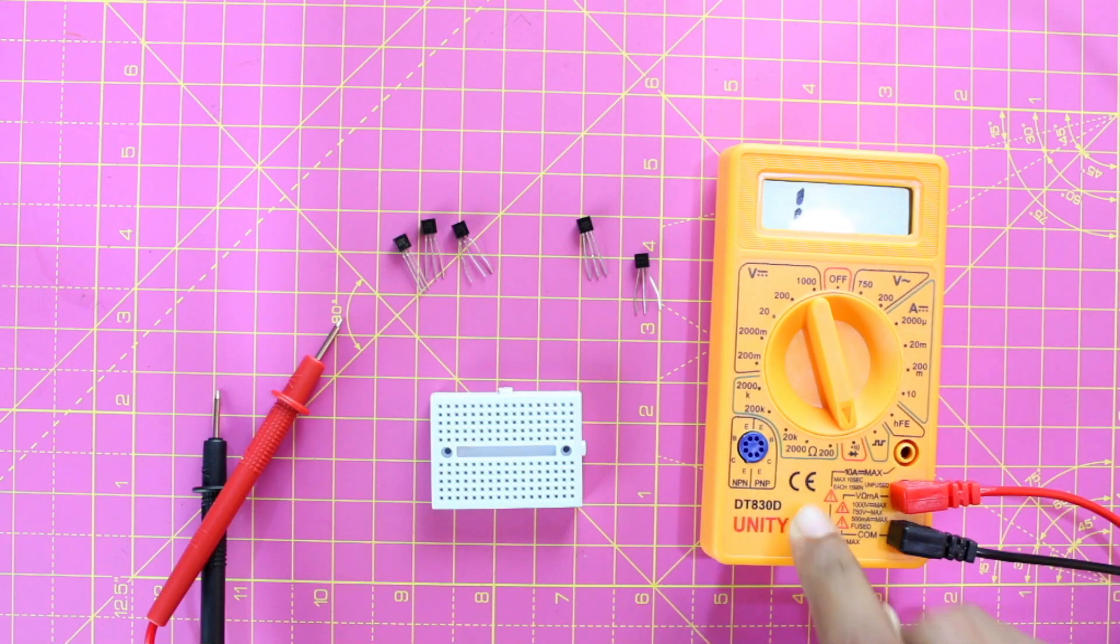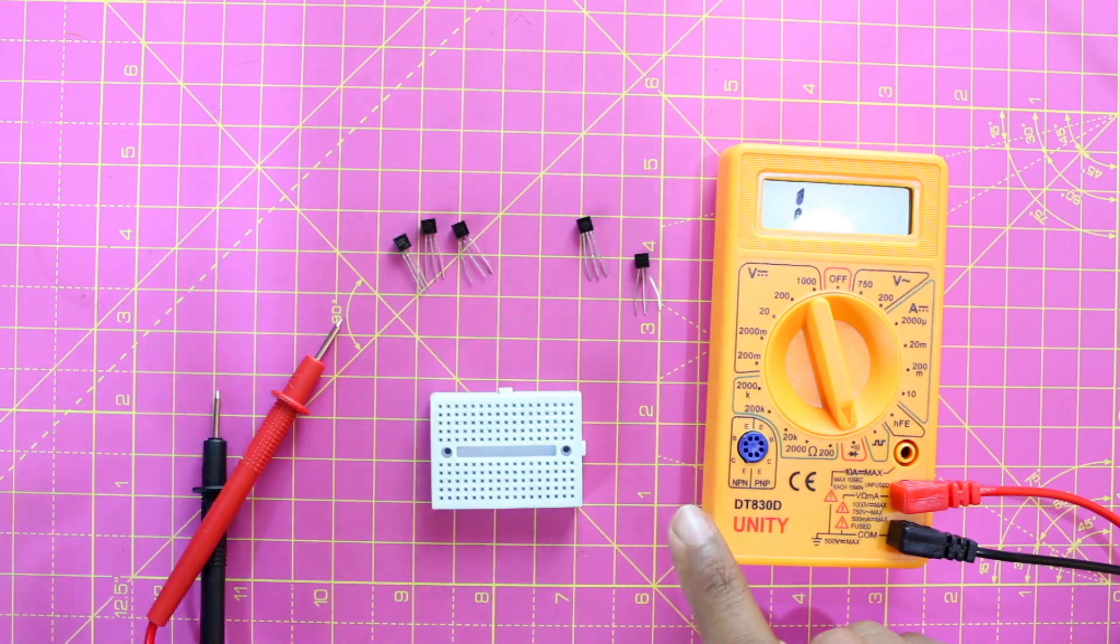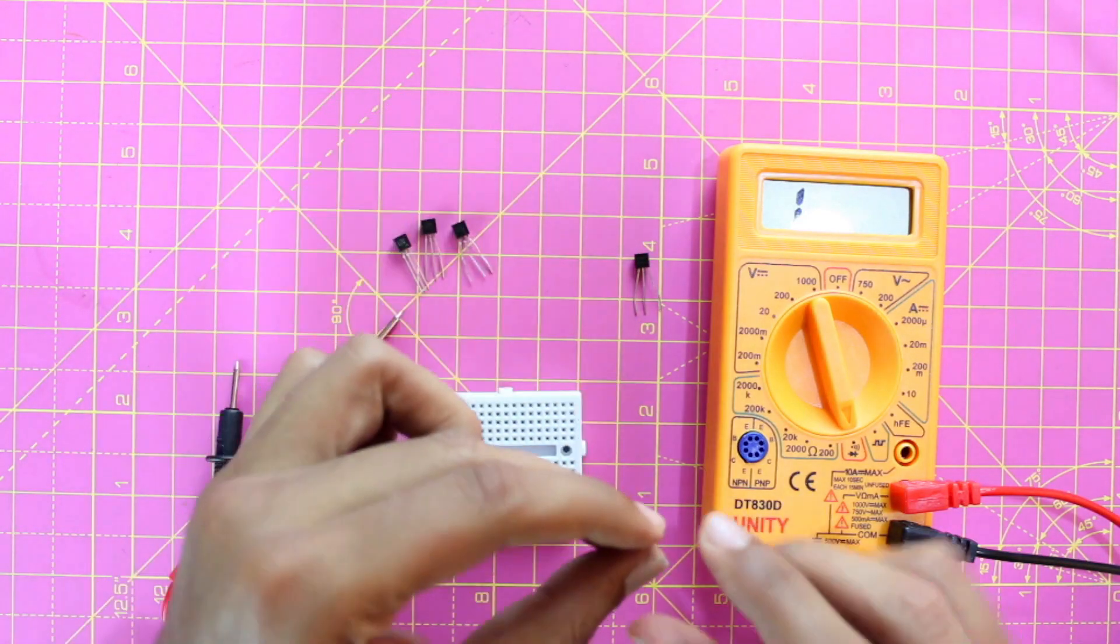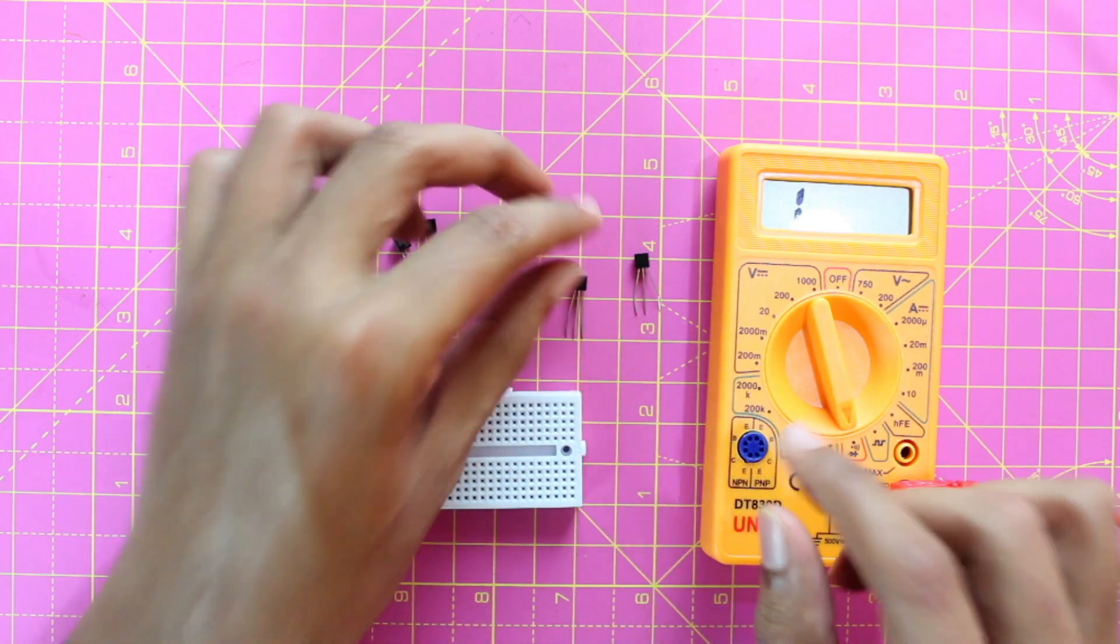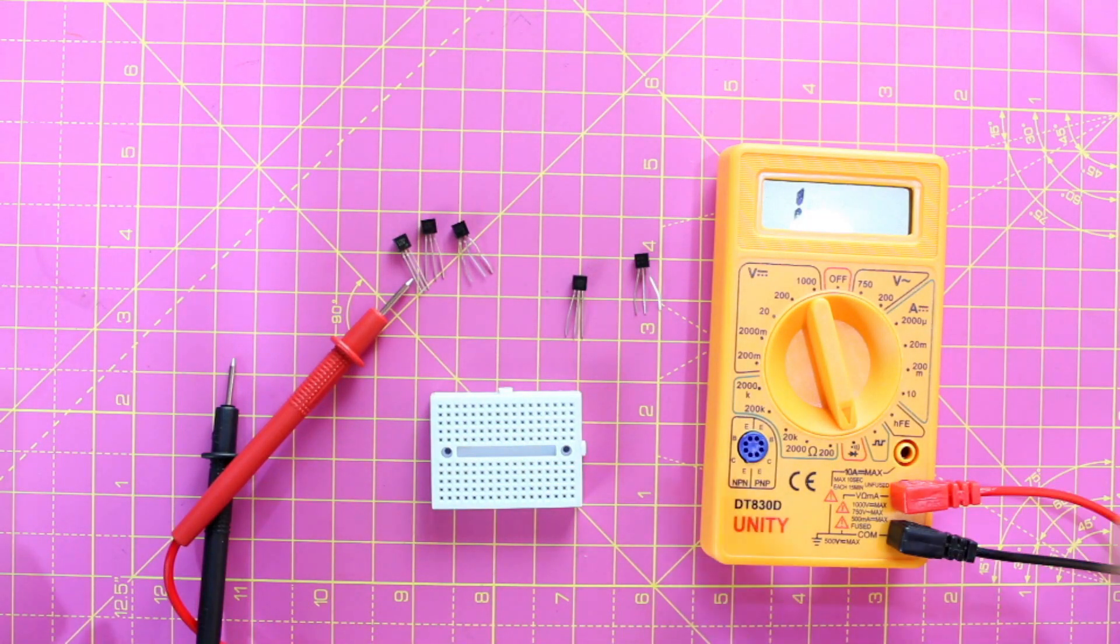Using the same method, you can also find if a transistor is an NPN transistor or a PNP transistor, and you can also find the collector, base, and emitter pins on the transistor. For all those, you can watch the next two videos that are linked here. Thank you, have a nice day, bye bye.